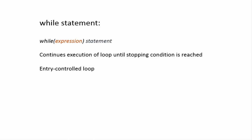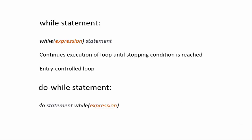The while loop is called an entry control loop because it first checks the condition before executing the statement — it tests the condition for repetition, and only if the condition is true will the loop execute. But in certain situations we want the statement to execute first and the condition to be checked at the end. In such cases we use the do-while statement.